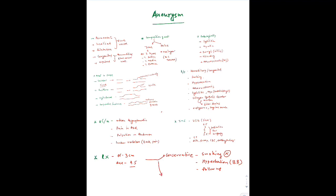If conservative treatment doesn't work and the patient's condition worsens with increasing aneurysm size, we go for a surgical approach. In surgical approach we basically do open repair or close repair, but we'll talk about surgical approach in detail in another video on aneurysm and surgery. This was all about the pathophysiology and the study of aneurysm. Thank you guys, we'll meet in the next video.